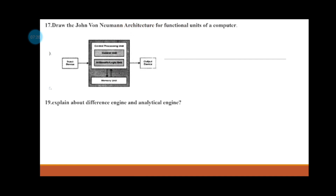In the first generation computer, there is a stored program concept that was developed by John Von Neumann. The architecture of John Von Neumann includes input unit, central processing unit, memory unit, and output unit.